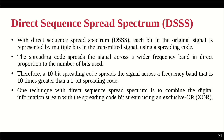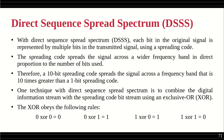One technique with direct sequence spread spectrum is to combine the digital information stream with the spreading code bit stream. To spread the actual information bit over a number of bits, we can use the XOR operation. You already studied XOR in digital electronics: 0 XOR 0 = 0, 0 XOR 1 = 1, 1 XOR 0 = 1, 1 XOR 1 = 0. If both inputs are the same, the output is 0; if they are different, the output is 1.